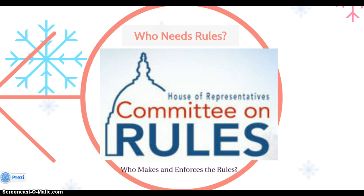The committee sets how, when, and for how long a bill can be debated. It also sets limits on how a bill can be amended, or if it can be amended. The Committee on Rules can speed up or delay passage of a bill, and carries a huge amount of weight in the legislative process in the House. This committee and the committee chair is usually very closely allied with — and in the back pocket of — the Speaker of the House. So when the Speaker wants something passed, he calls up his buddy on the House Committee on Rules and gets it done.